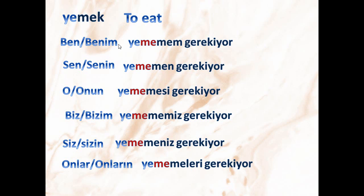In the verb 'yemek', which means 'to eat', we use this group of suffixes. At the beginning we may put 'ben' (the objective pronoun) or 'benim' (the possessive pronoun) — there is no difference in meaning. You may also choose not to use any of them. In all three cases you will have the same meaning. It's only sometimes for emphasis that you may use 'ben' or 'benim' with a certain intonation.